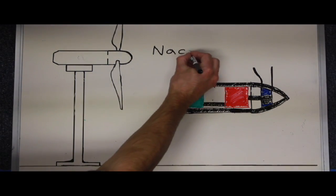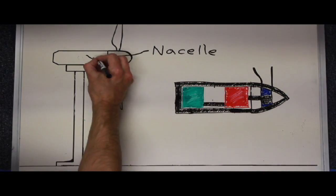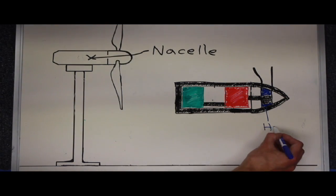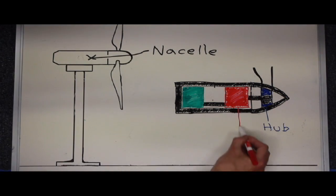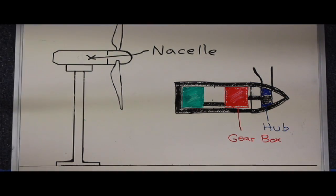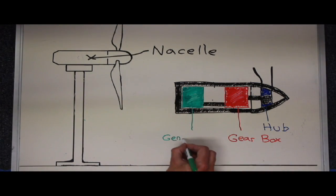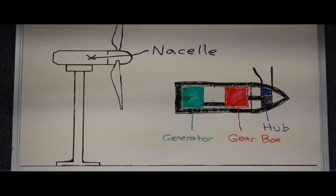The nacelle houses the inner workings of the wind turbine that are responsible for electrical power generation. All three rotor blades are attached at the hub. The hub slowly turns a shaft connected to the gearbox, which turns a faster shaft in order to power the electrical generator. Electrical power is then distributed to customers via the electrical grid.